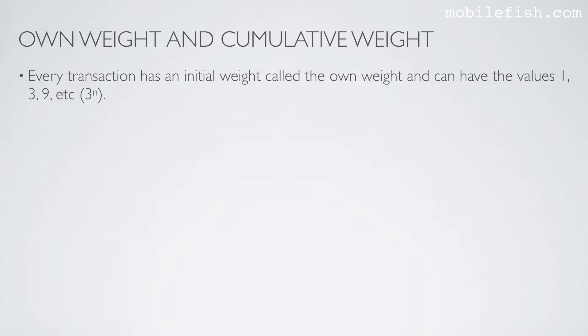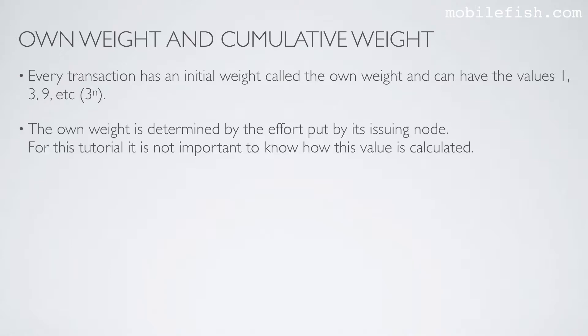Every transaction has an initial weight called the own weight and can have the values 1, 3, 9, etc. The own weight is determined by the effort put by its issuing node. For this tutorial it is not important to know how this value is calculated.